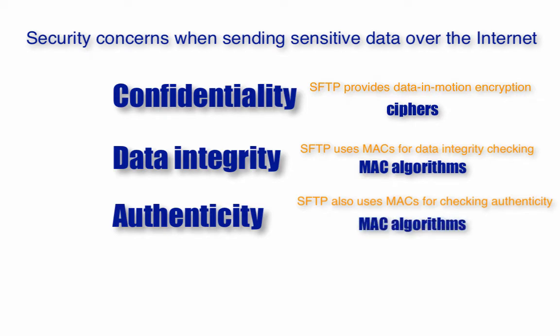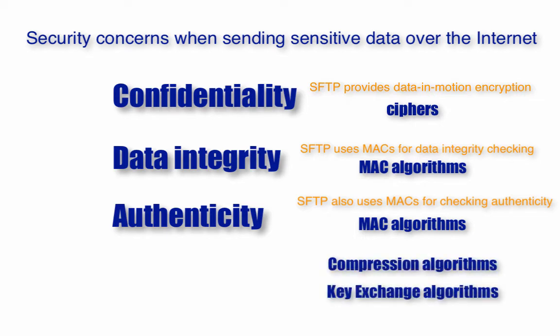In addition to those two algorithms, SFTP has two more that also play important roles in SFTP transmissions: compression algorithms and key exchange algorithms. Compression algorithms are responsible for compressing files before transmission, which reduces the size of compressible files and improves transmission times. Compression also increases the entropy of the data, making it more resistant to certain cryptanalysis attacks. Key exchange algorithms are responsible for establishing secure methods of exchange for the symmetric keys needed during encryption.